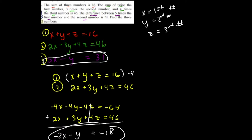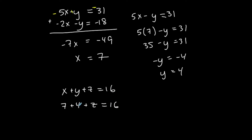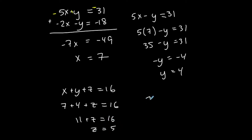I have x and y. Now I need z. Going back to equation 1 — the sum of all of them is 16 — so x plus y plus z equals 16. Substituting: 7 plus 4 plus z equals 16, which gives 11 plus z equals 16, so z equals 5. My solution is the ordered triple (7, 4, 5).